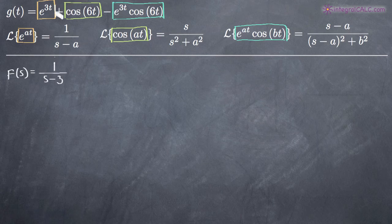Then we have this plus here. So we're going to go ahead and add to that. Cosine of 6t, using our formula here, we can see that a is equal to 6. So our formula is going to give us s over s squared plus 6 squared. So we'll go ahead and put that in there.